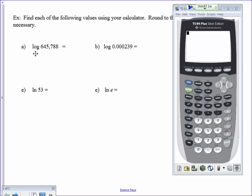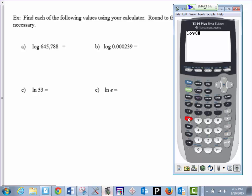The first one, we have log of this rather large number. The log button is just to the left of your 7, and we see this one is L-O-G, so that's the correct button to use. We're going to do log, and then it will open a parenthesis. Then I'm going to type in the value 645788, close off the parenthesis, and press enter. This one would be 5.81, and then rounding to the nearest thousandth, it would be 5.810.